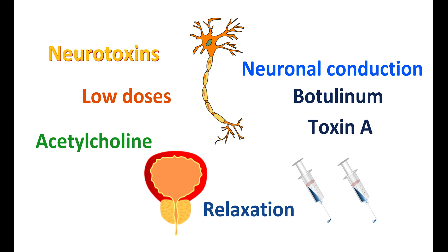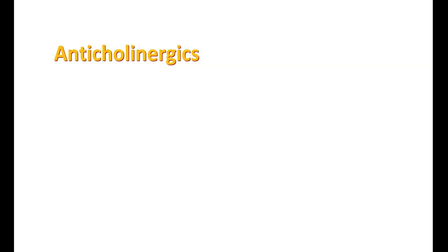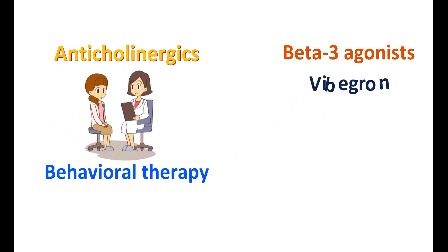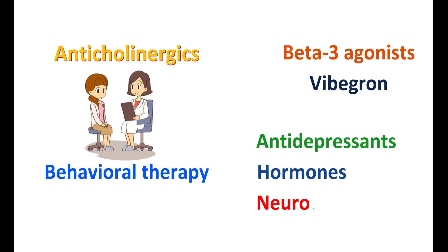These are the various pharmacological options for treating an overactive bladder. Anticholinergics play a key role and are widely used; they can also be combined with behavioral therapy. Beta-3 agonists like vibegron also show promising effects in treatment. Antidepressants, hormones, and neurotoxins are used in special conditions. That's all for today — I hope this video is useful to you. Thanks for watching.